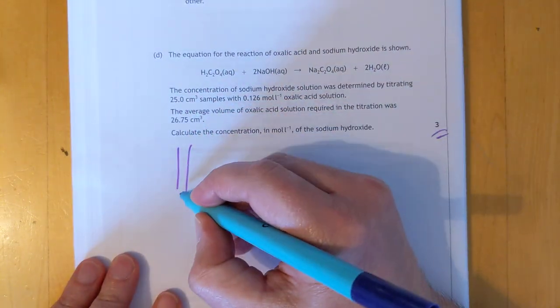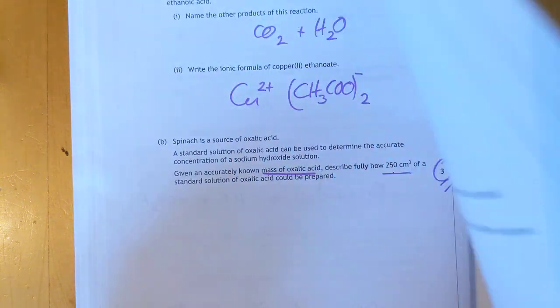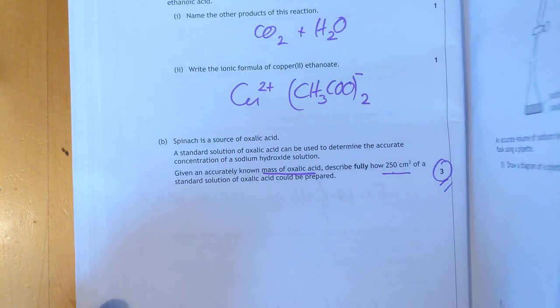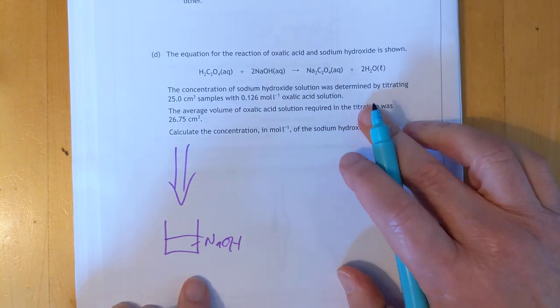Right, I always like to have a diagram of what's going where. There's my oxalic acid. There is my sodium hydroxide solution. So this is NaOH.